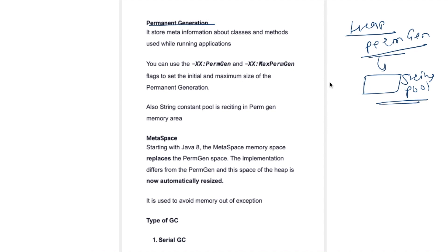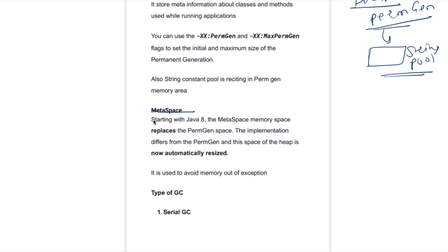The last part of heap memory is permanent generation, or PermGen. In PermGen we store the string pool. This memory is garbage collected when you are running out of memory — it is the last phase; we don't usually collect garbage from this location unless your application is running out of memory. MetaSpace was introduced in Java 8 as a replacement for the permanent generation space. The implementation difference is that MetaSpace is automatically resized.